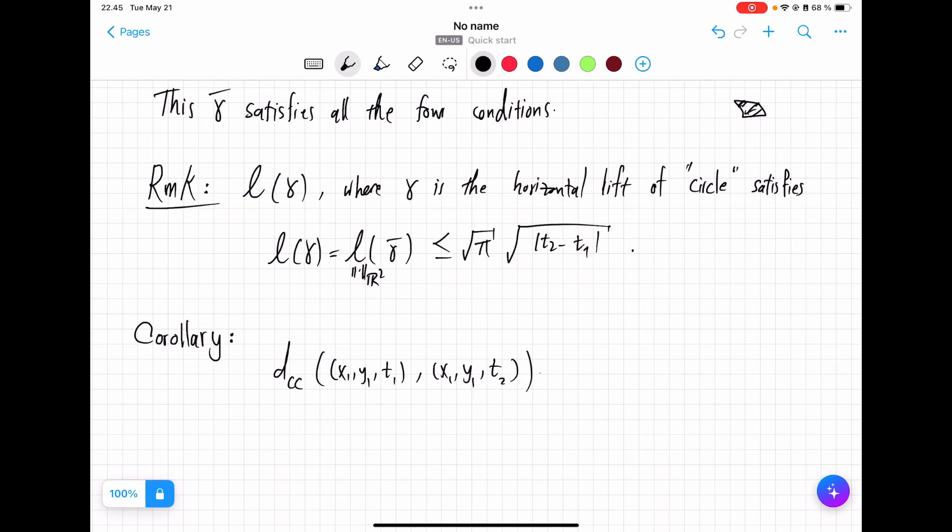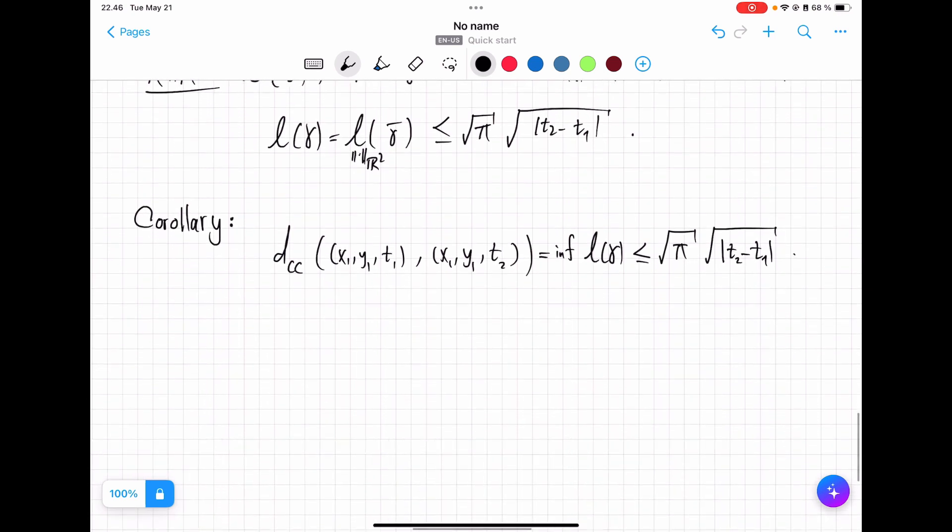this is by definition equal to infimum of all the length of horizontal curves between them and now we have found one: square root of T2 minus T1. And this is in sharp contrast to what happens in R3. Now, this is saying that if you join 0,0,0 to the point 0,0,T, then the distance of the two will be less than a constant square root of absolute value of T, not T. For T value is very small,